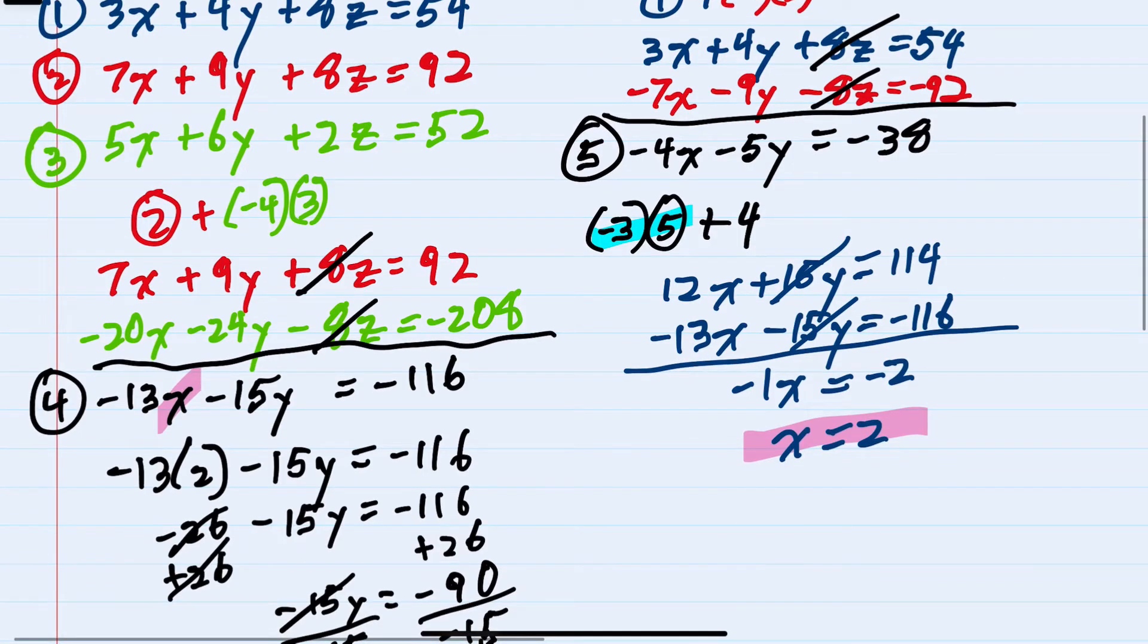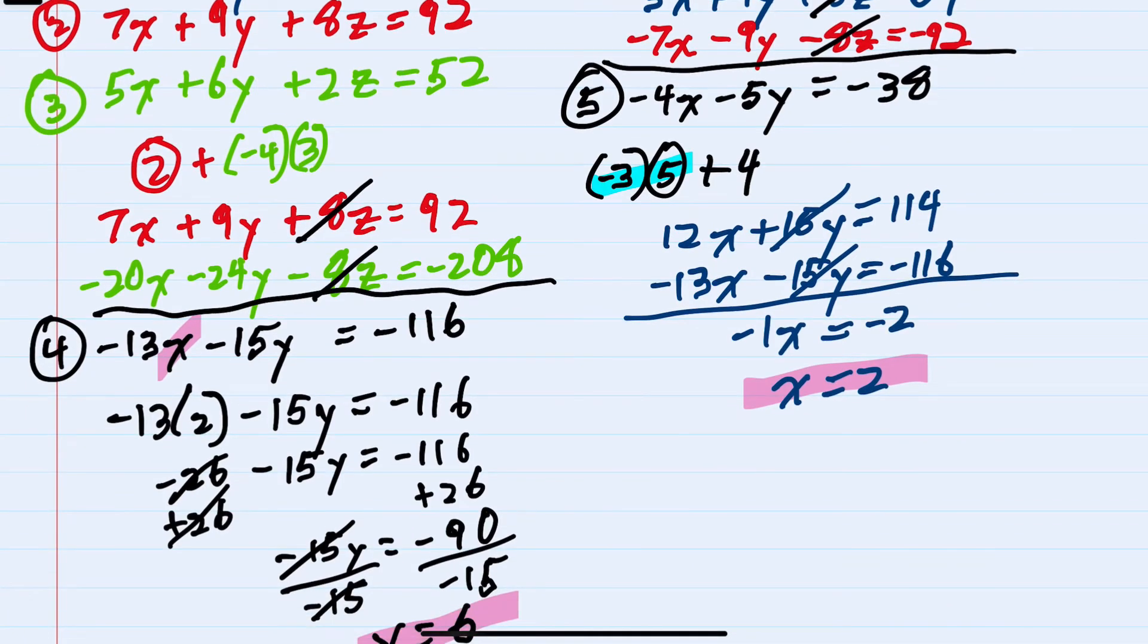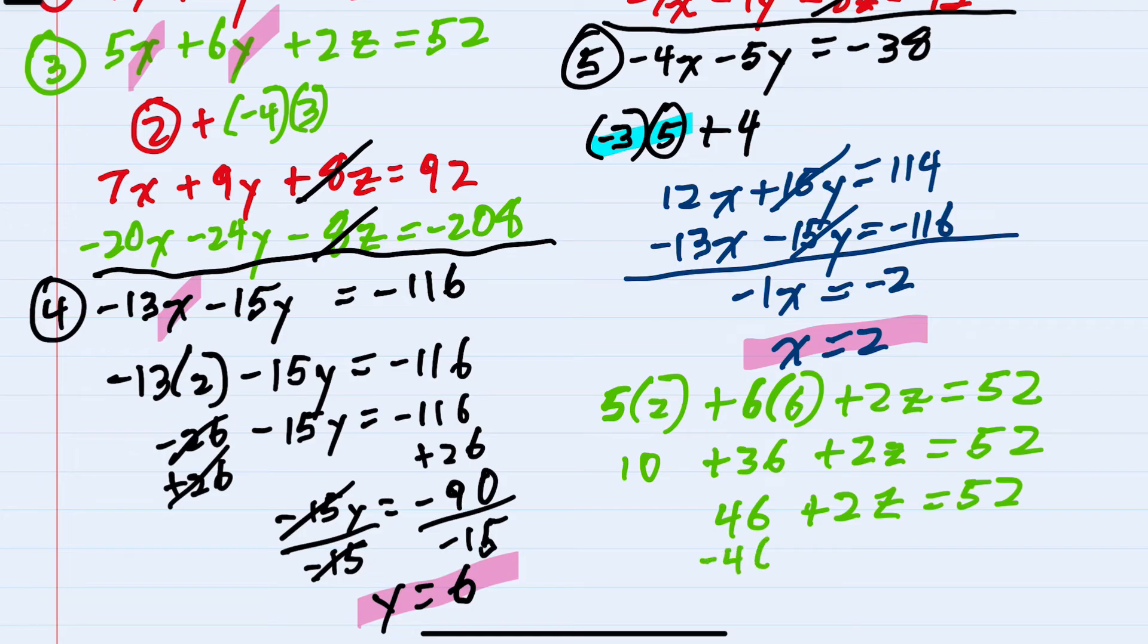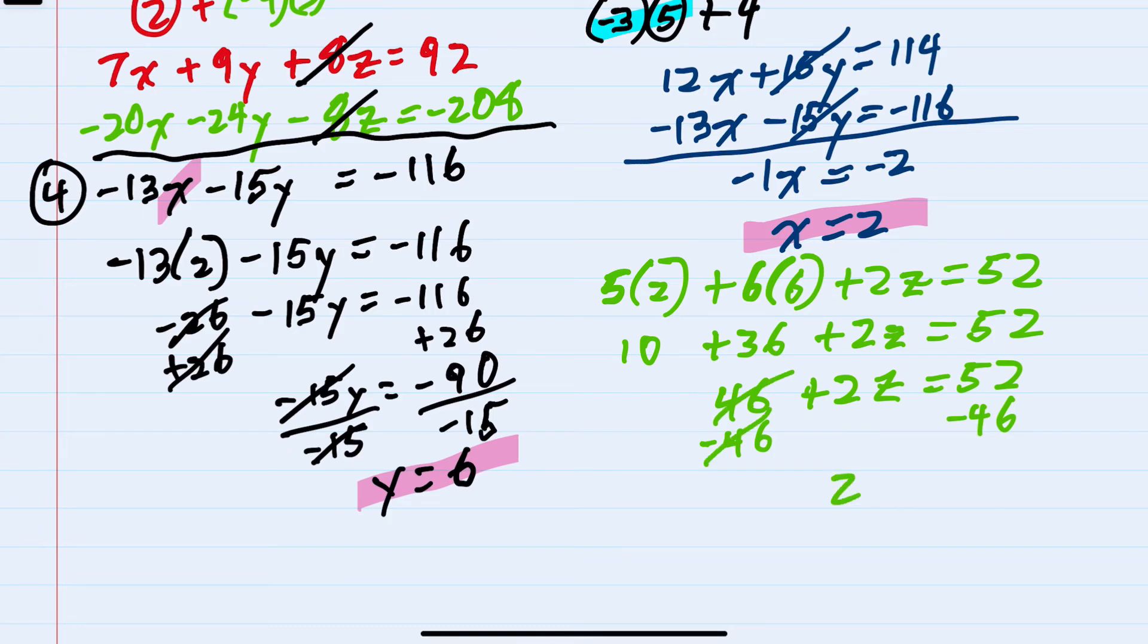We would now want to look back to one of those original equations. Plug in the values of X and Y to find Z. It doesn't matter which one we choose. So I'm going to use the third equation which has 5 times X but X is 2 so that's 5 times 2 plus 6 times Y but Y is 6 so that would be 6 times 6 and then plus 2Z equals 52. Simplifying, 5 times 2 is 10, 6 times 6 is 36. Combining like terms 10 plus 36 is 46. To isolate the Z term I would subtract 46 from both sides leaving me with 2Z on the left and 52 minus 46 would be 6 on the right hand side. Solving for Z, Z equals 3.